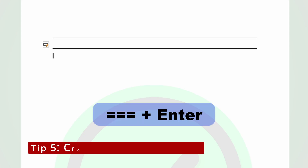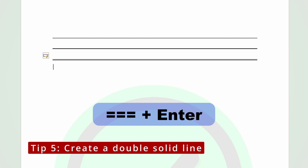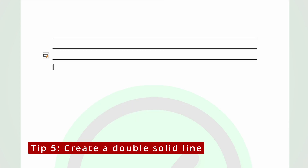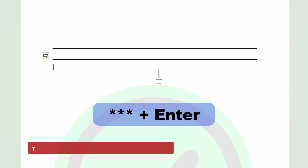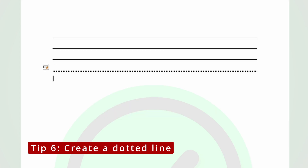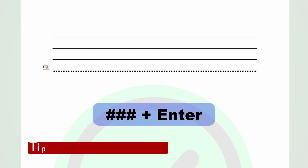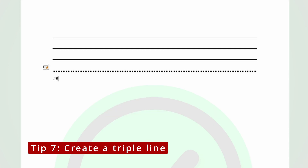If you press the equal to sign three times, and then you press enter, it should create a double line. If you press the star sign three times, and then you press enter, it should create a dotted line. If you press the pound sign or the hashtag sign three times, and then press enter, it should create a triple line.